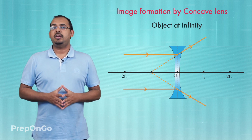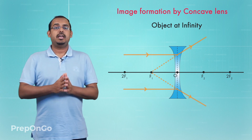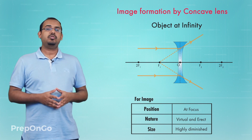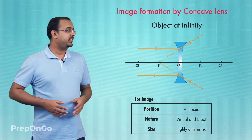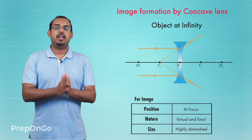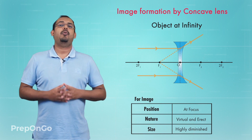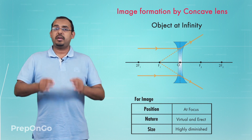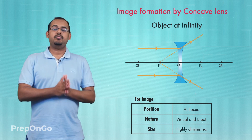So in the first case of image formation with the concave lens, for an object placed at infinity, the image forms at the principal focus of the concave lens. The image is virtual and erect, and highly diminished in size compared to the original object. This is the first case, where we used the basic principles and special light rays to construct the ray diagram.